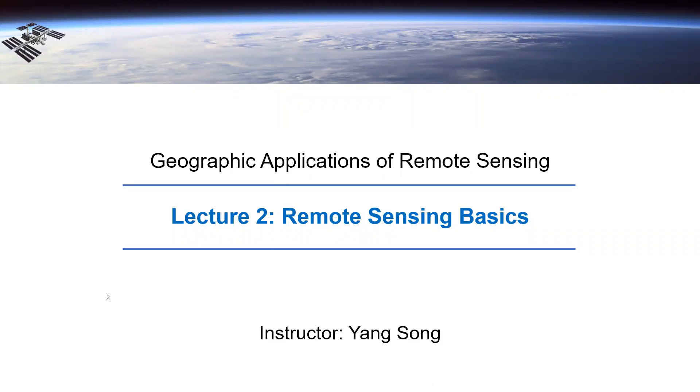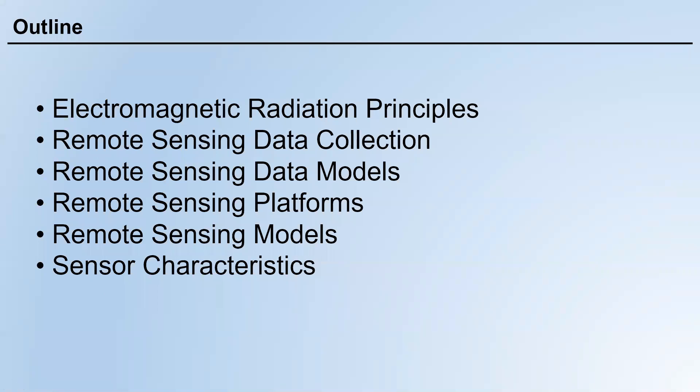Specifically, we're going to talk about these topics — these aspects of remote sensing as a whole. First, electromagnetic radiation principles, or EMR principles. Secondly, remote sensing data collection, and then remote sensing data models — how do we store remote sensing images. Remote sensing platforms: on the ground, airborne, and satellites, which are out-of-atmosphere platforms. And different remote sensing models, and remote sensor characteristics.